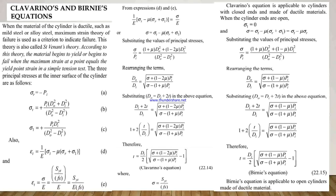Substituting the values of principal stresses, we get the equation: sigma divided by pi equals (1 + mu) times do² plus (1 - 2mu) times di², divided by (do² - di²). Rearranging this, we get do/di equals the square root of (sigma + (1 - 2mu) times pi) divided by (sigma - (1 + mu) times pi). Substituting do = di + 2t, we get the wall thickness: t equals (di/2) times (square root of (sigma + (1 - 2mu) times pi) divided by (sigma - (1 + mu) times pi), minus 1). This equation is called Clavarino's equation.